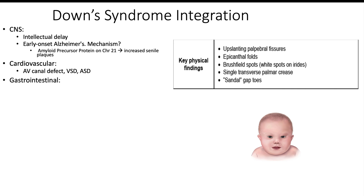From a GI standpoint, there are two integrative cases you have to know. Number one is duodenal atresia. They give you an x-ray showing the double bubble sign — the gastric bubble and then distally another dilation on your KUB x-ray. You also have to understand: are these patients with duodenal atresia going to have bilious or non-bilious emesis? The answer is bilious emesis because it's distal to the stomach.